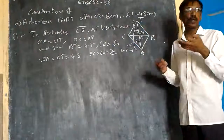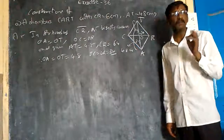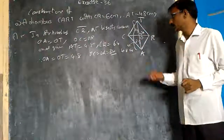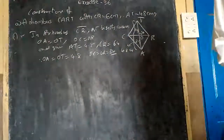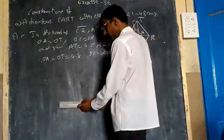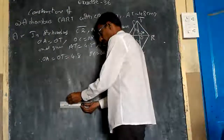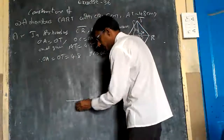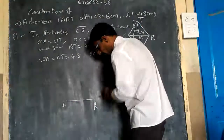So now, you are going to construct the Rhombus. Simply keep in mind: draw C-R first. C-R is 6 centimeters. I will take 6 centimeters. This is my 6 centimeters — this is my C-R. C and R are marked.